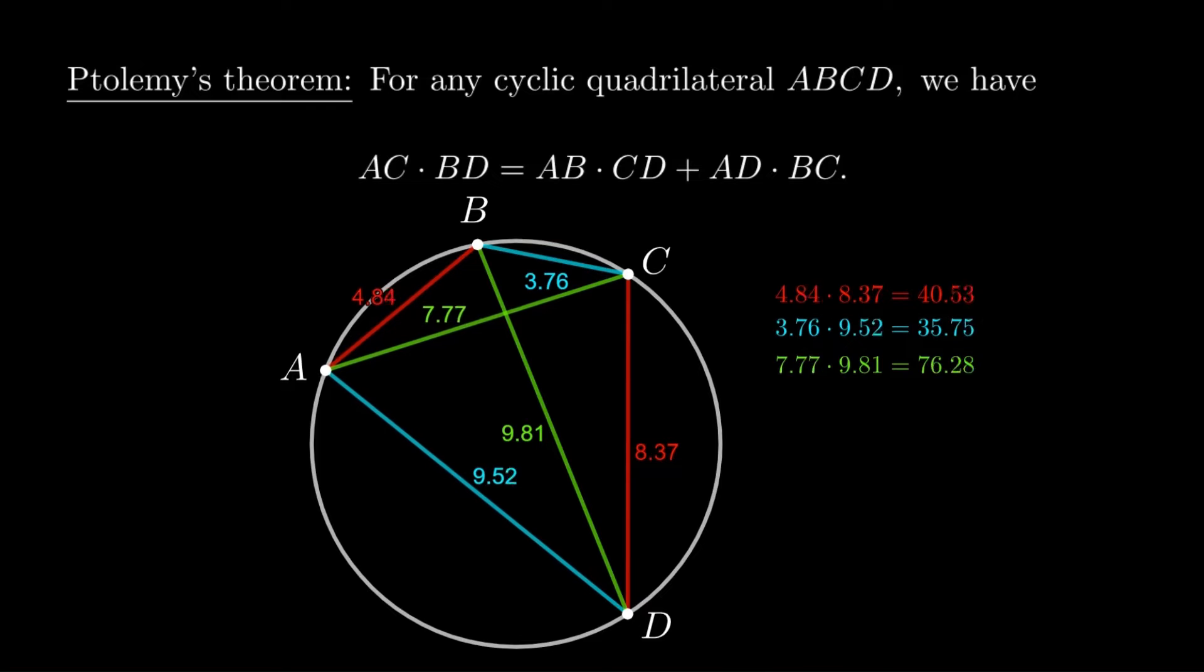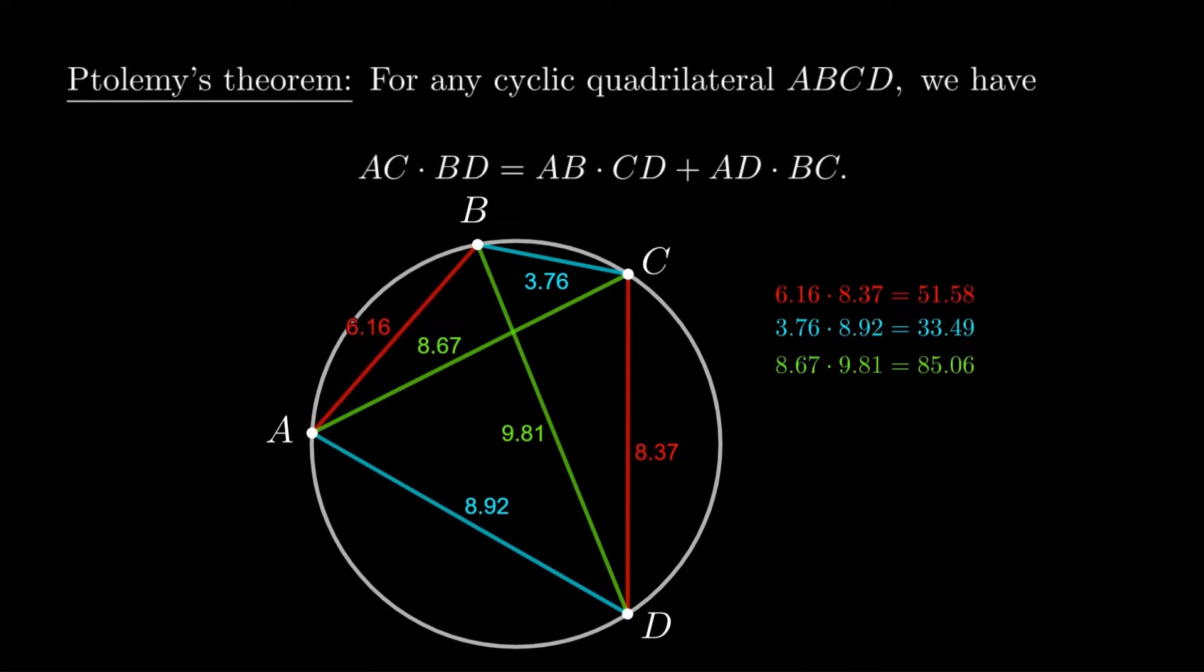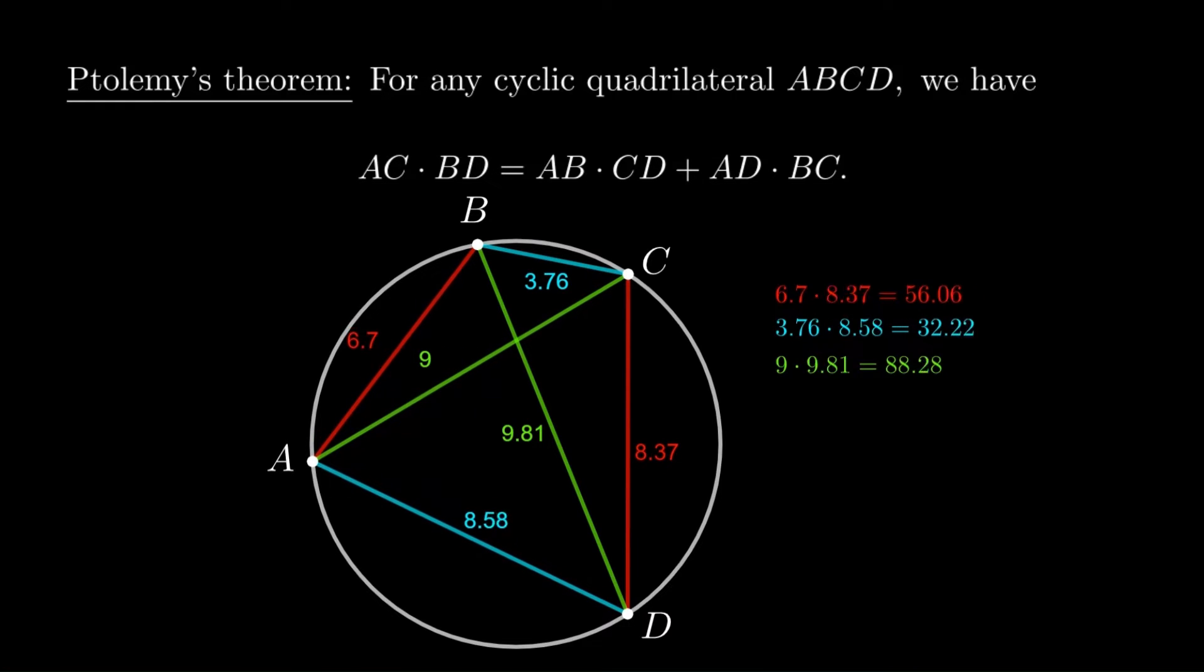In this diagram, the two pairs of opposite sides have the same colors, blue and red, and the diagonals are green. Sure enough, as we vary points on the circle, it seems as if the red product plus the blue product equals the green product.